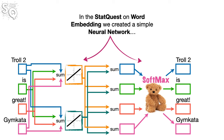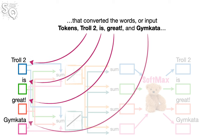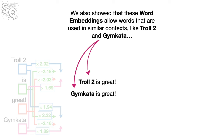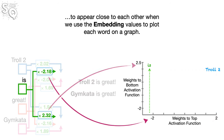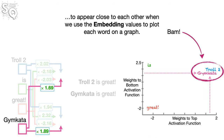In the StatQuest on Word Embedding, we created a simple neural network that converted the words or input tokens Troll2, Is, Great, and Gymkata into numbers which we call Word Embeddings. We also showed that these Word Embeddings allow words used in similar contexts, like Troll2 and Gymkata, to appear close to each other when we use the embedding values to plot each word on a graph.